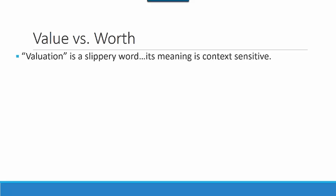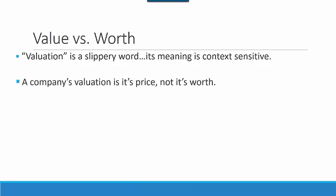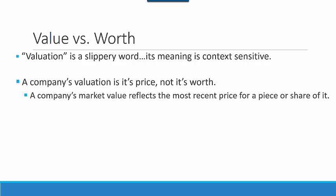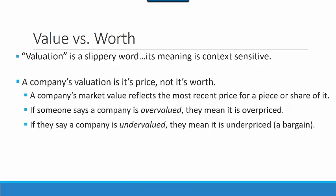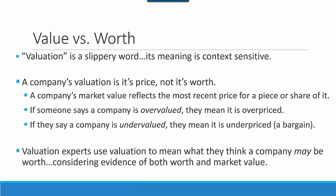Value vs. Worth. Valuation is a slippery word — its meaning is context-sensitive. A company's valuation is its price, not necessarily its worth. A company's market value reflects the most recent price for a piece or a share of it. If someone says a company is overvalued, they mean it is overpriced. If they say a company is undervalued, they mean it is underpriced, or a bargain. Valuation experts use valuation to mean what they think a company may be worth, considering evidence of both worth in terms of asset value and income generating capability, and market value. But markets can overvalue and undervalue a company.